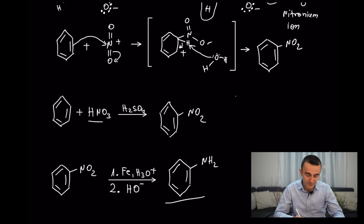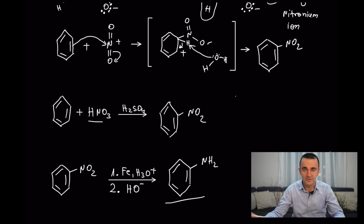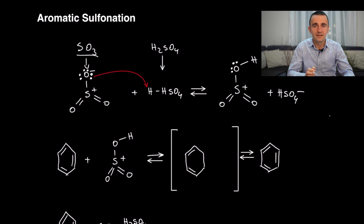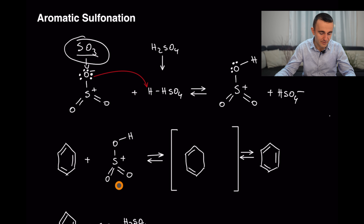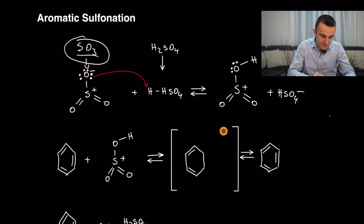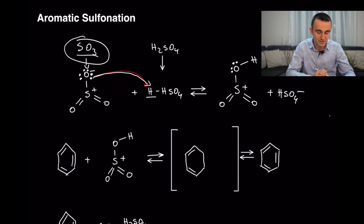A special reaction with nitrobenzene: if you react it with iron under acidic conditions and then treat with a base, you get the formation of an NH₂ group. This compound is called aniline, or aminobenzene. This reaction is industrially used to produce aniline, which is used as a reactant in further synthesis.